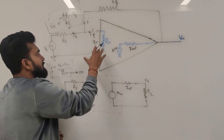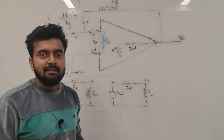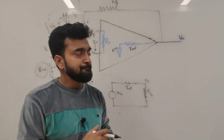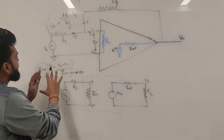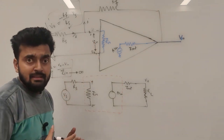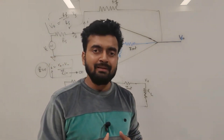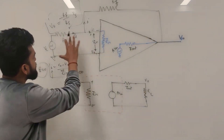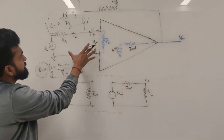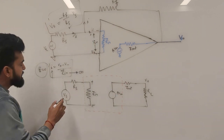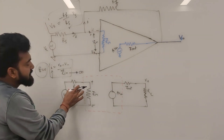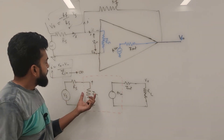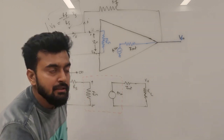Therefore the input impedance of an operational amplifier must be infinite ideally, or practically as high as possible. Another way to see this is to draw the simplified network for the input side: we have the source voltage with source resistance Rs and the input impedance Zin, and if we apply the voltage divider technique here...